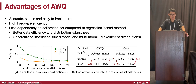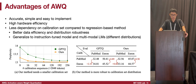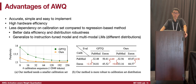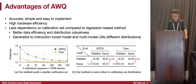AWQ is very accurate, very simple, easy to implement, has good hardware efficiency, and has less dependency on the calibration dataset. We will show that the method is also applicable to visual language models, even if we only calibrate the model on text-only corpora.